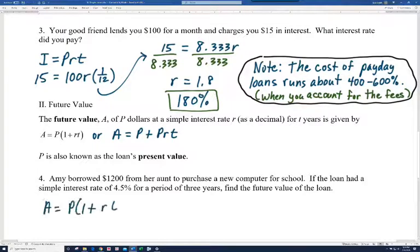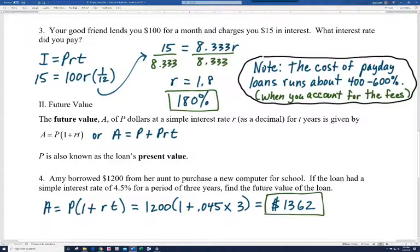Now we're ready to do number four. So here's our formula. So she borrowed $1,200. That's the present value. And then it'll be one plus R, which is going to be 0.045 times the time. Notice it's three years here. So three. And so you should be able to put that into your calculator just like it looks. And you get $1,362.